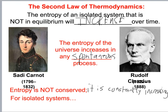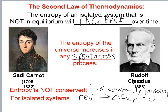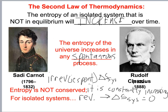For isolated systems with a reversible process, delta S of the system equals zero. For an irreversible — that is, spontaneous — process, delta S of the system is greater than zero.